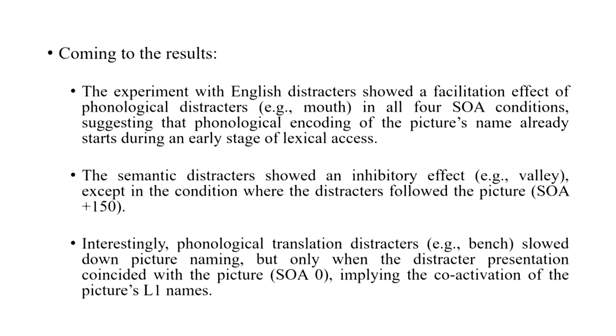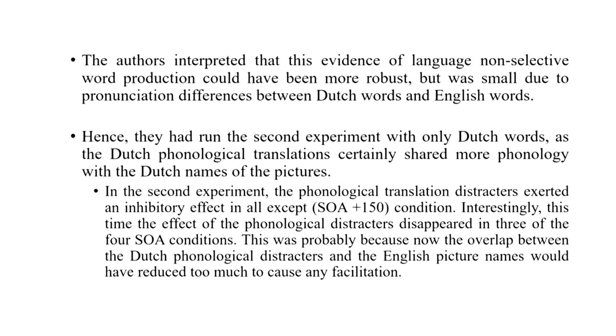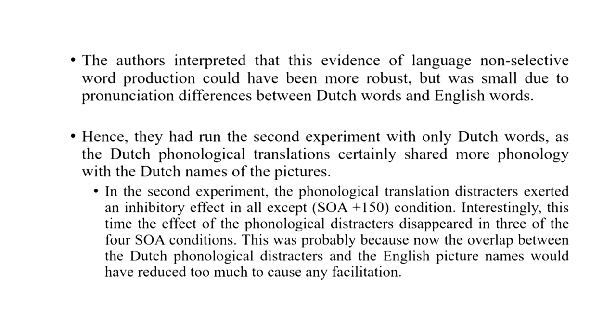Interestingly, when phonological translational distractors were used — for example, 'bench' for 'berg' — it slowed down picture naming much like semantic distraction, but only when the distractor presentation coincided with the picture at SOA 0, implying at least some degree of co-activation of the picture's L1 names. The authors interpreted these results as evidence that language production in bilinguals is non-selective. They suggested this effect may have been more robust but was slightly smaller due to pronunciation differences between Dutch and English — for example, 'berg' is pronounced very differently from 'bench,' so there may not have been much phonological overlap.